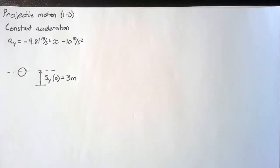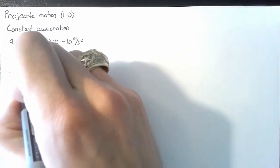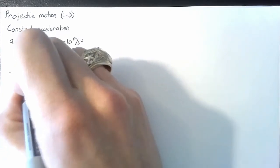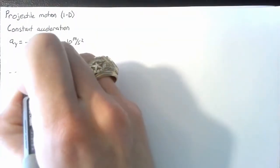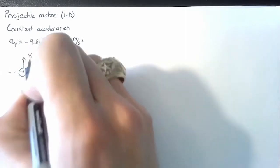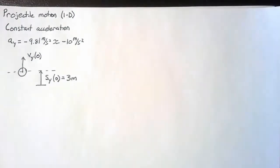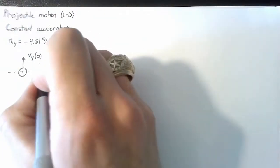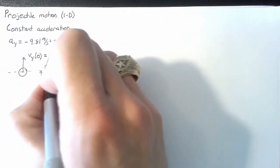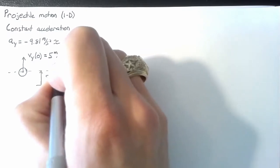Okay, but that's not enough by itself. We also need to know the initial velocity. So let's give this thing an initial velocity v_y, and again, we're going to have that velocity at time zero. This we're going to give a value of 5 m/s.